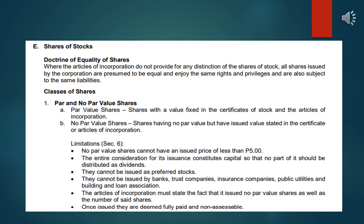The articles of incorporation must state the fact that no par value shares are issued, as well as the number of such shares. Once issued, they are deemed fully paid and non-assessable. That is the first class of shares — par value and no par value shares.